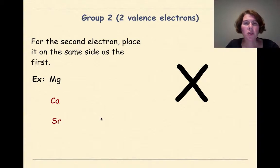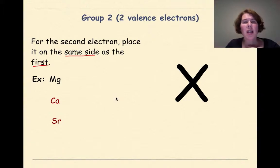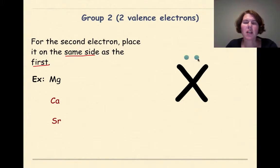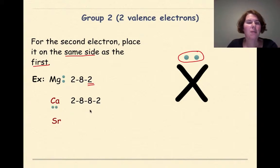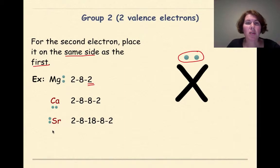Group 2 elements have 2 valence electrons. For the second electron, place it on the same side as the first. This is how I teach Lewis dot diagrams — if your teacher has a different way, follow their approach. Magnesium has an electron configuration of 2, 8, 2 — 2 electrons together on one side. Calcium is 2, 8, 8, 2. Strontium is 2, 8, 18, 8, 2. We can put the 2 electrons on any side; I just believe in keeping them together.